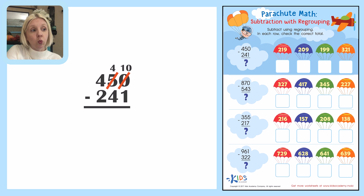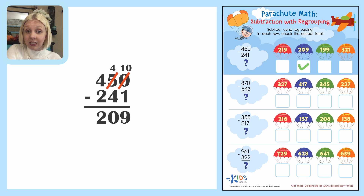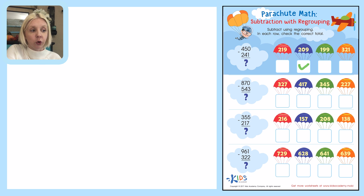So ten minus one is nine, four minus four is zero, and four minus two is two. My answer is 209. I'm going to come over here, find that answer, and put a check next to 209 since that's my correct answer.